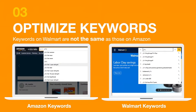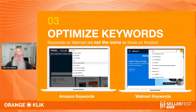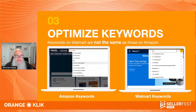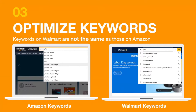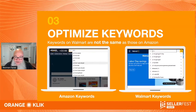Number three is keyword optimization. You can use Amazon or Walmart's search bar to check keyword phrases. For example, typing 'gifts' on Amazon versus Walmart shows completely different keyword groups — 'gifts for women, gifts for men' on Amazon compared to 'gifts for girls age 11 in toys' on Walmart. The markets are completely different, showing a distinct demographic.